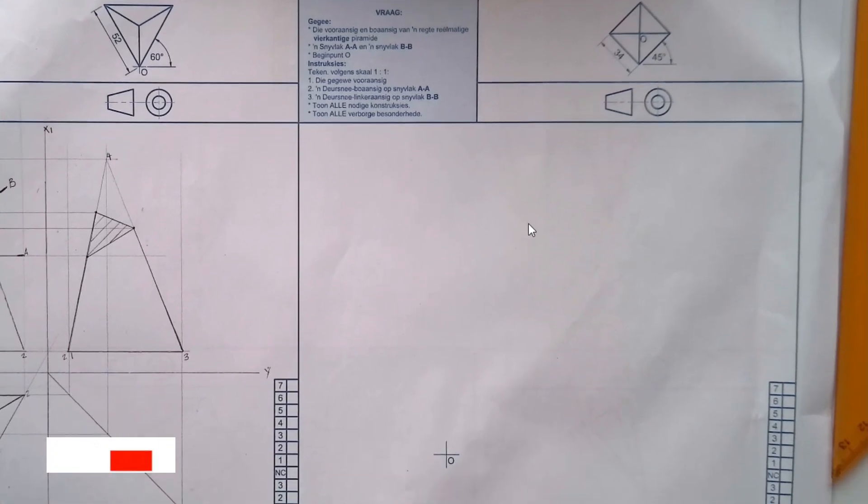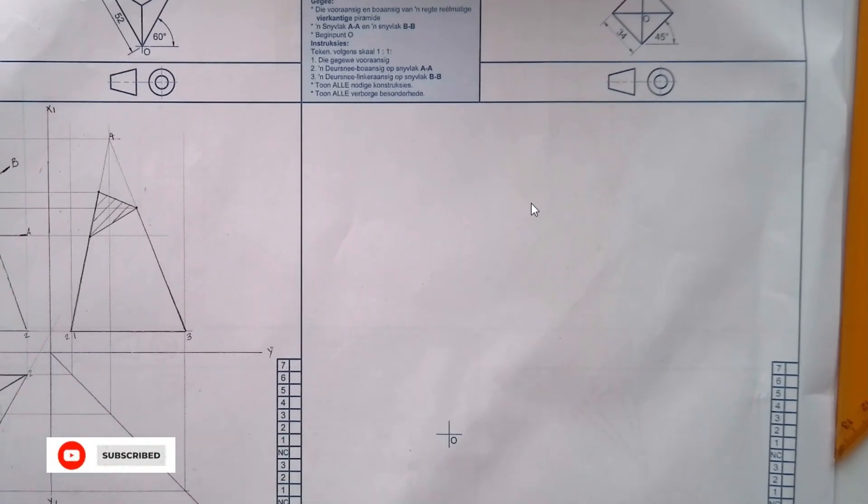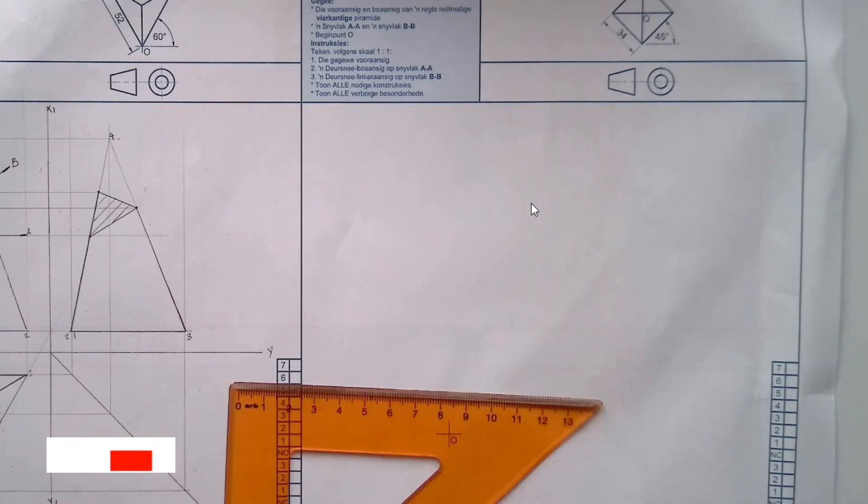We're going to start with the top view in construction though. We have to start it with construction and we can see that we are given one side of a square and each side equals 34.